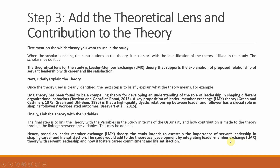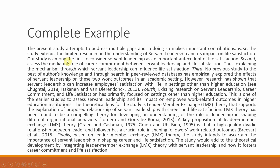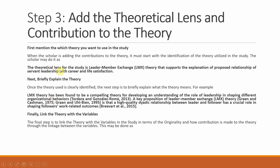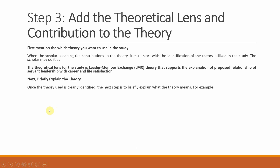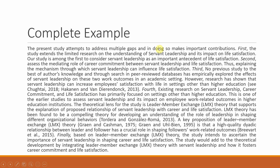To explain the interrelationship between these three variables, you are using Leader-Member Exchange theory. This is how you write how you are contributing to the theory — by adding more variables to the theory and explaining the relationships in light of this theory. You have taken the bold text from steps one, two, and three and presented it as a whole paragraph with contributions numbered first, second, third, fourth, and then the theoretical contribution. What you are doing is expanding the bounds of the theory by using it to explain a new relationship.